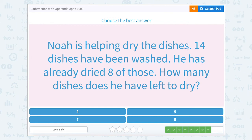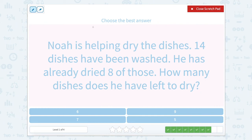Noah is helping dry the dishes. 14 dishes have been washed. He has already dried eight of those. How many dishes are left to dry? Noah started with 14 dishes that he cleaned. Then he dried eight of them. And so the rest are still wet and need to be dried. So 14 minus eight equals six.